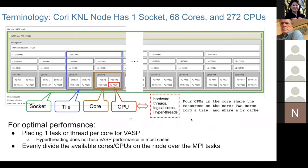I've included a compute node illustration for KNL to establish consistent terminology. Cori KNL has one socket, 68 cores, and 272 CPUs.